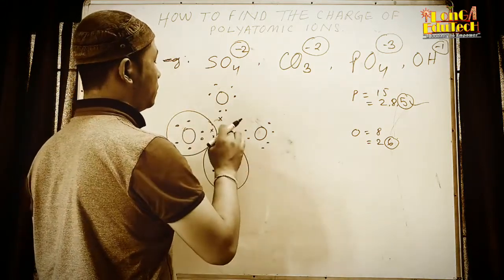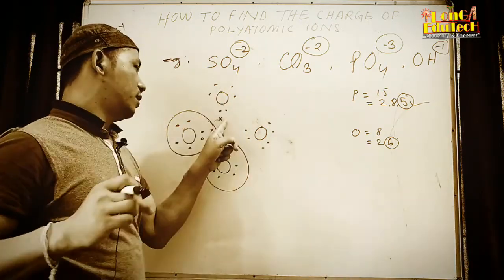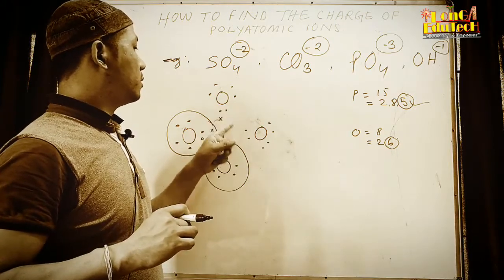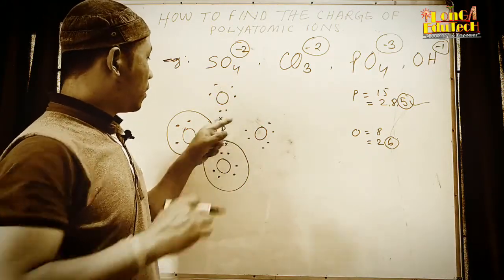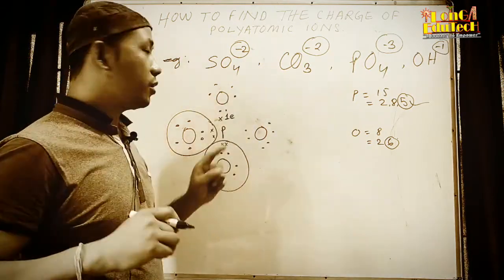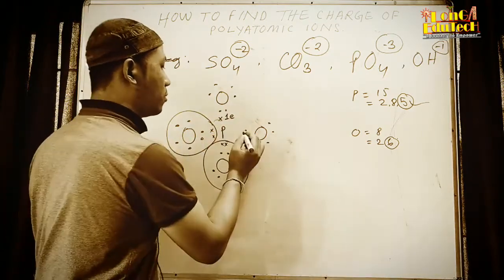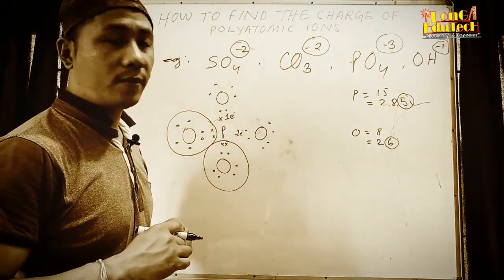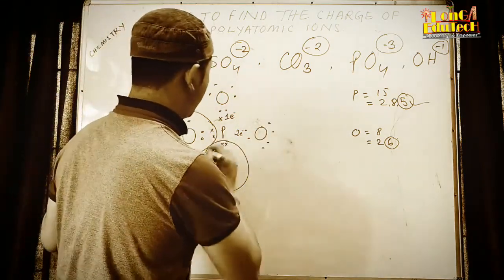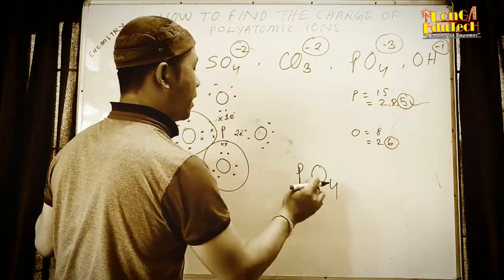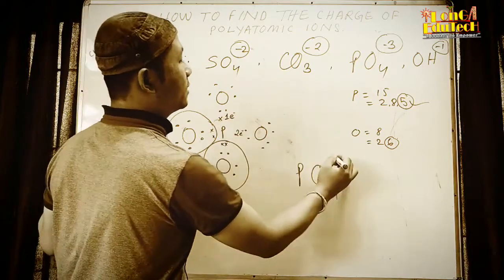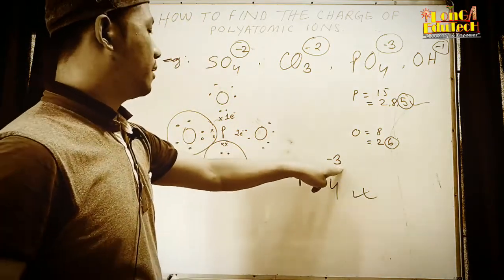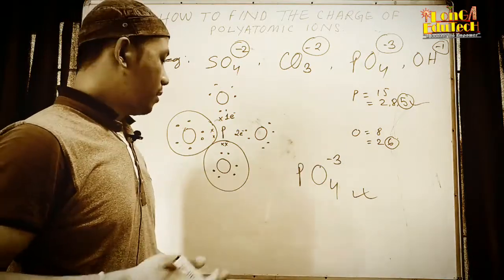Phosphorus shares its five valence electrons — one with each of four oxygens, and one extra with another oxygen. One oxygen receives only a single shared electron, requiring one more electron, while the other oxygens each need two more. Adding up: one plus two gives three electrons required in total. Therefore, the charge of phosphate PO4 is minus three.